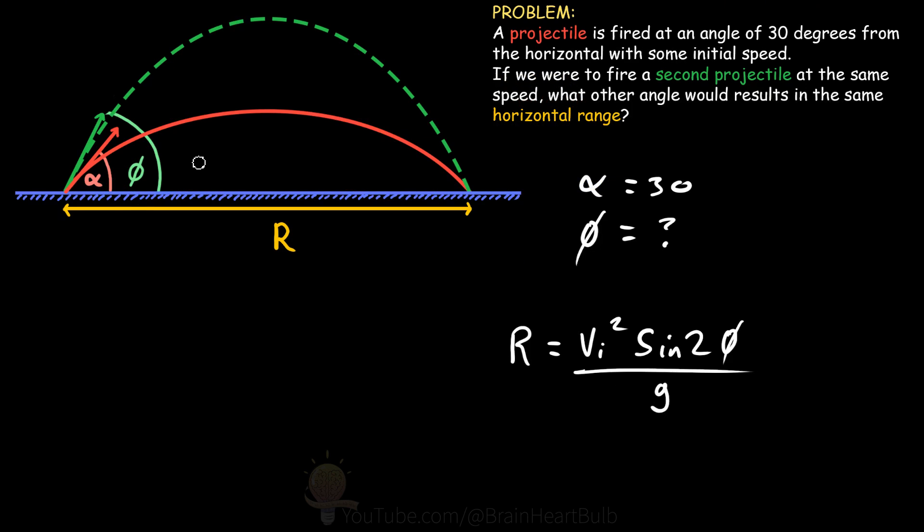Now for both our projectiles, we know that the range, the initial velocity, and the acceleration due to gravity is the same. The only difference we have is the angle here. So effectively we can ignore these variables here, and just focus on the sine of the angle here.